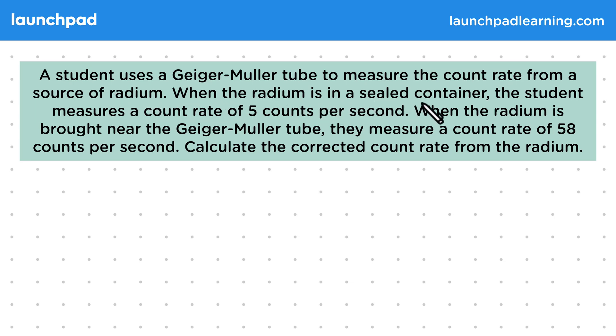When the radium is in a sealed container, the student measures a count rate of five counts per second. When the radium is brought near the Geiger-Müller tube, they measure a count rate of 58 counts per second. Calculate the corrected count rate from the radium.